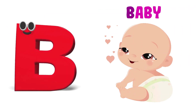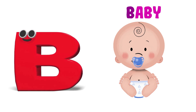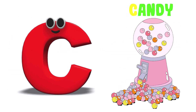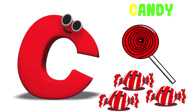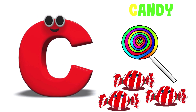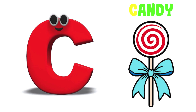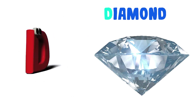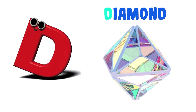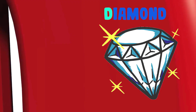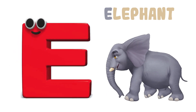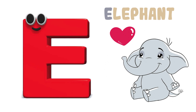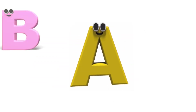B is for Baby. B-B-Baby, B-B-Baby, B-Baby. C is for Candy. C-C-Candy, C-C-Candy, C-Candy. D is for Diamond. D-D-Diamond, D-D-Diamond, D-Diamond. E is for Elephant. E-E-Elephant, E-E-Elephant, E-Elephant.